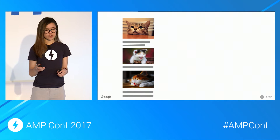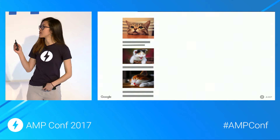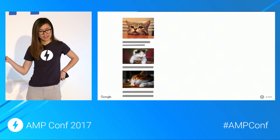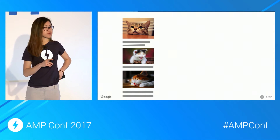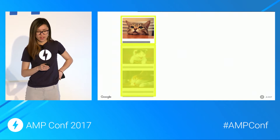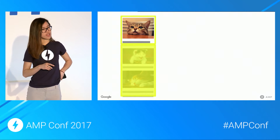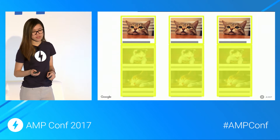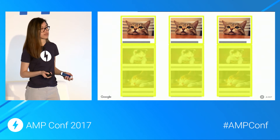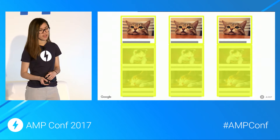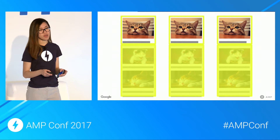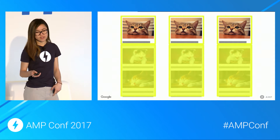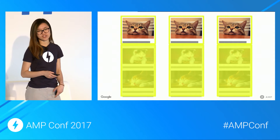Say a document typically has three large images — I like to call this document a study in catnaps. Only one of these images is visible above the fold. When you're in AMP pre-render mode, the browser can download and pre-render three AMP documents using the bandwidth that would have been required to pre-render a single non-AMP document. The consequence is that as an app, you can pre-render way more aggressively AMP HTML documents than you could have pre-rendered regular HTML documents.